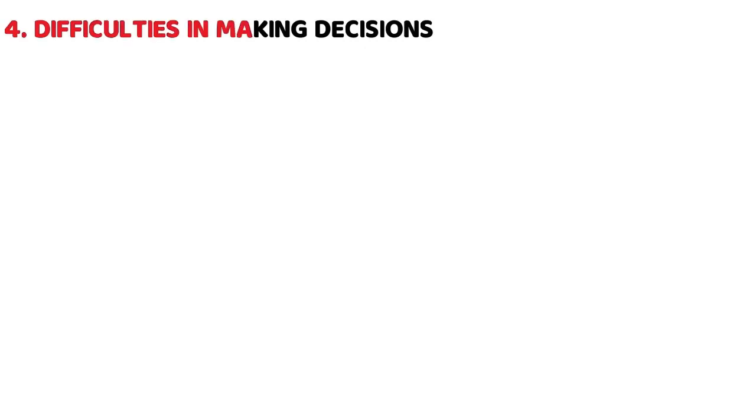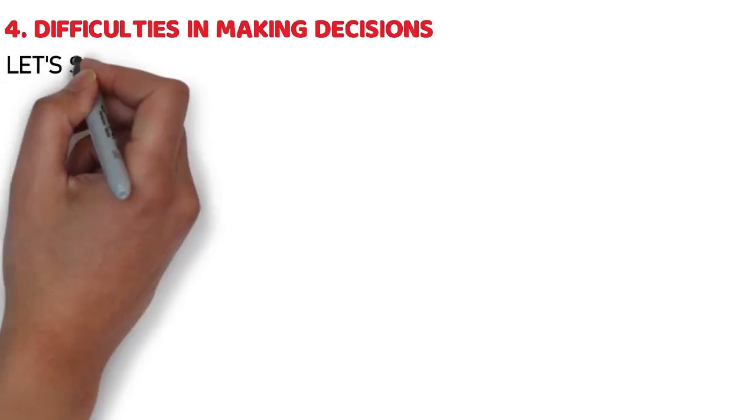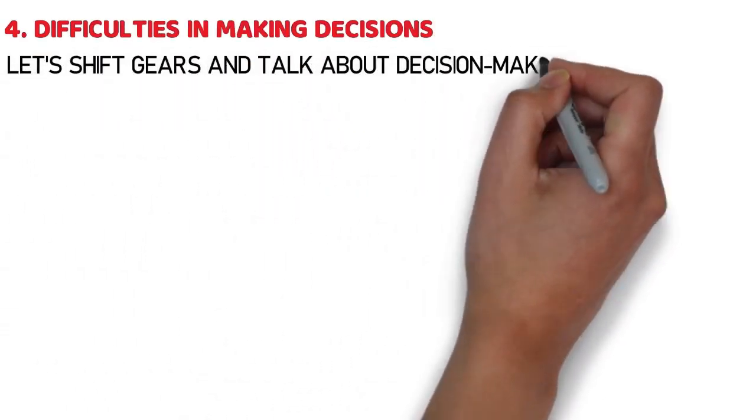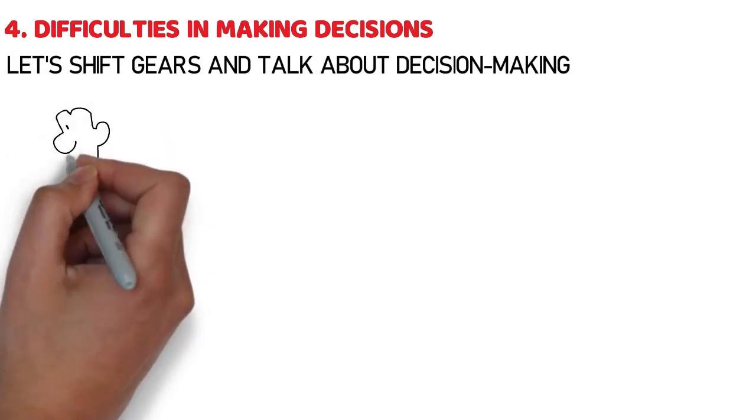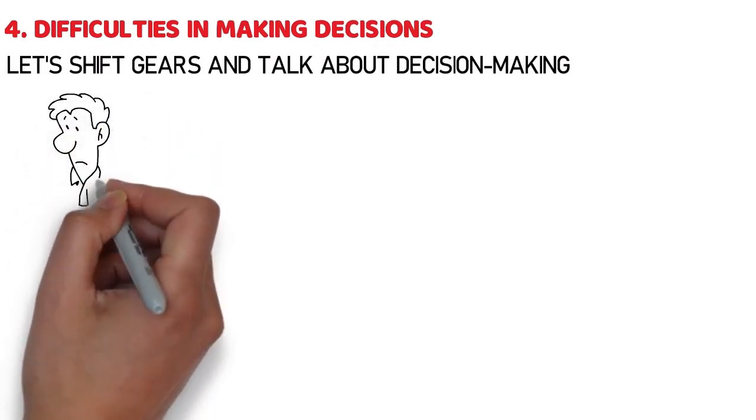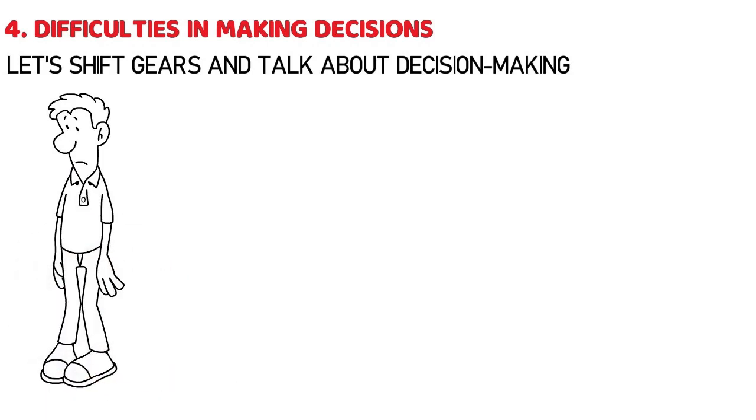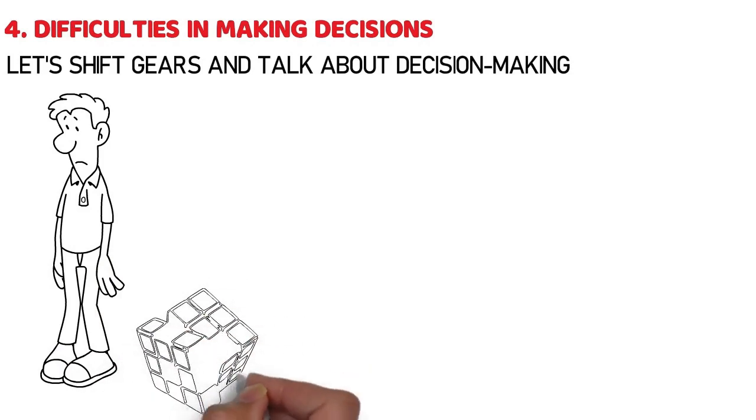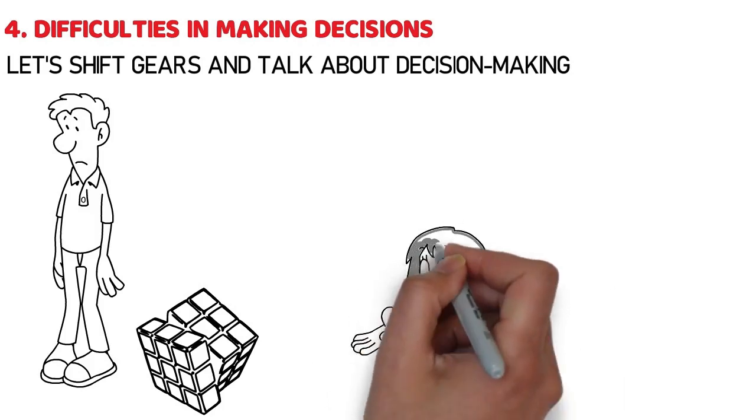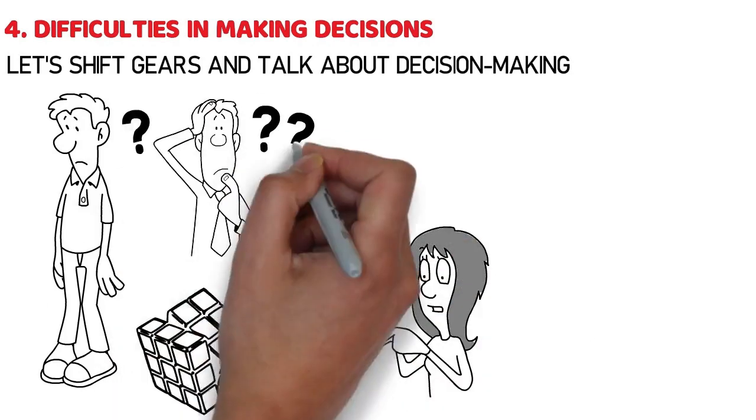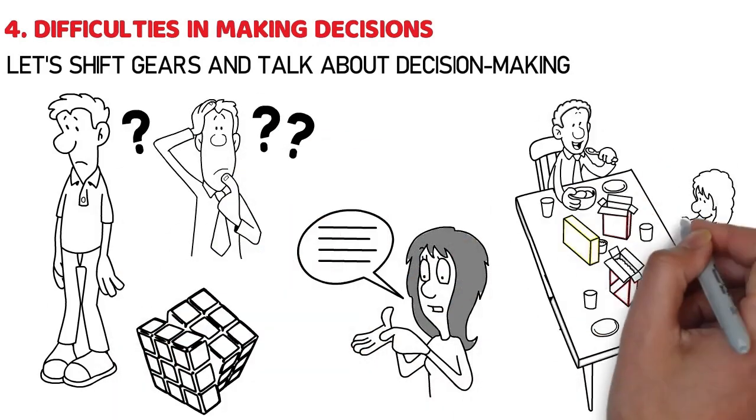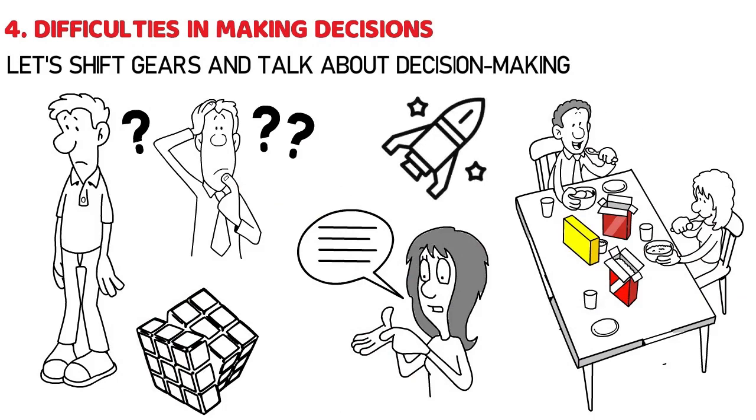Number 4: Difficulties in making decisions. Let's shift gears and talk about decision-making, or more like, the struggle bus that decision-making turns into when you're tangled up in a relationship that's more about control than connection. Picture this: every choice, big or small, starts to feel like you're trying to solve a Rubik's Cube blindfolded. Why? Because when your wife is always questioning your judgment, or making you second-guess yourself, deciding what to have for breakfast can feel as complicated as planning a space mission.